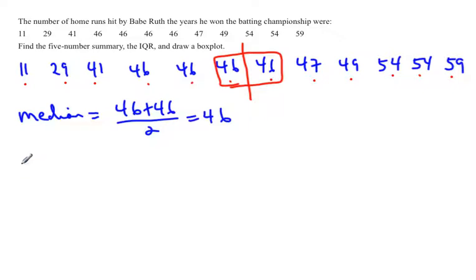So now that we have the median, we can find the lower quartile. So to find the lower quartile, you actually only work with the numbers that are below the median. So lower quartile or quartile 1, you again find the median of these numbers.